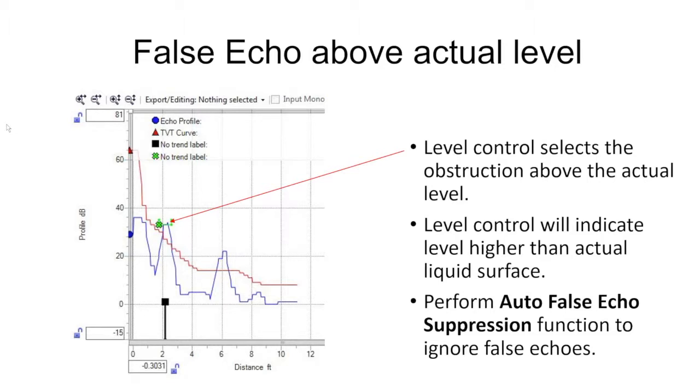In this case it could be a pipe, it could be the bottom of a mounting nozzle, could be anything that reflects the energy above our actual target. Unless we do anything it's always going to select that false echo as our actual level. So what we'll need to do is go into the program and do an auto false echo suppression. The actual procedures vary between the models of level transmitter. You can refer to the manual or give us a call at Gilson Engineering.